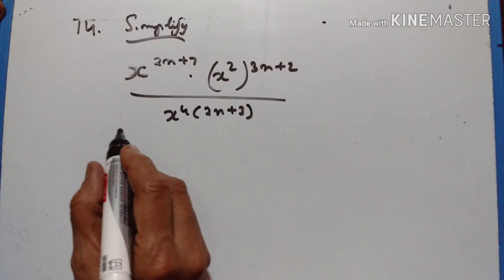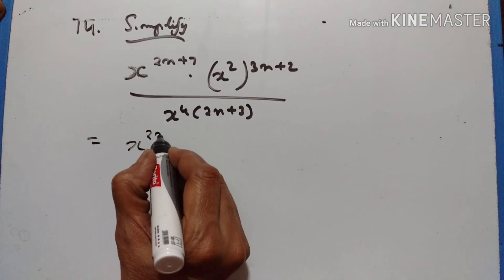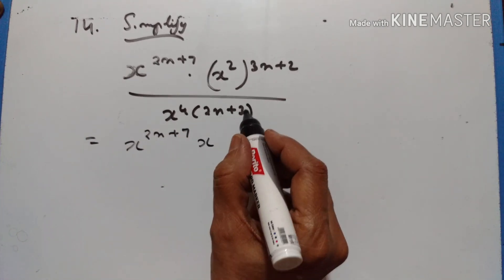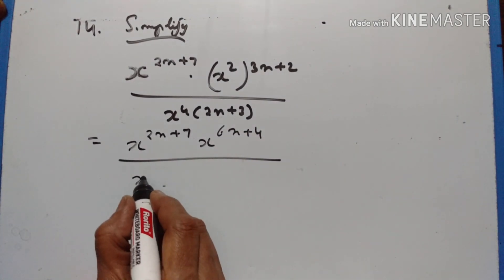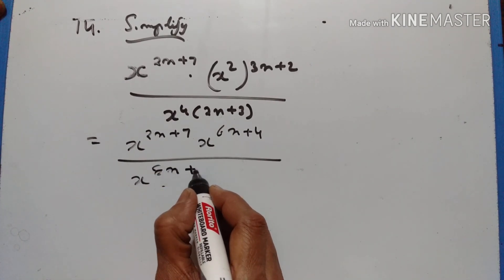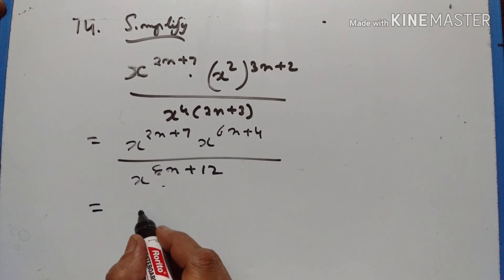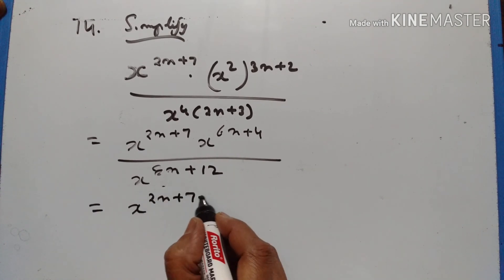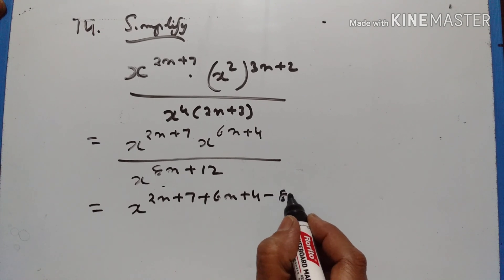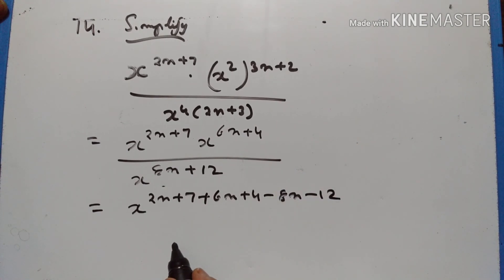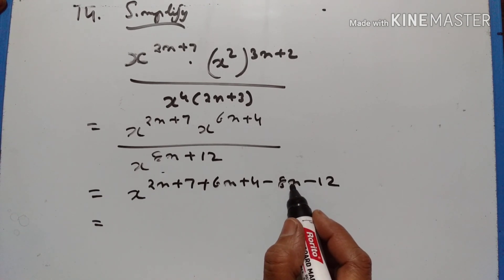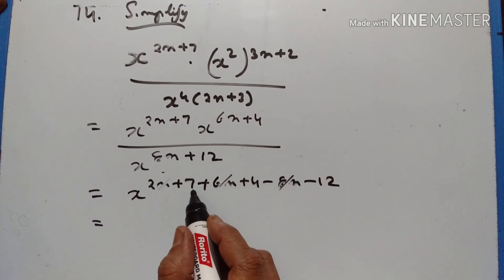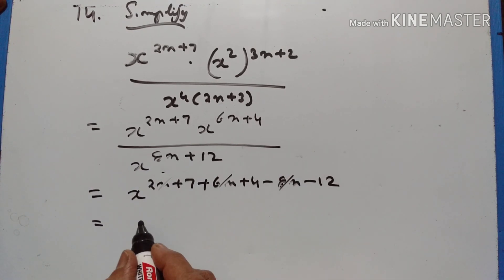Let us simplify this. x raised to the power of 2n plus 7, times x raised to the power of 2 into 3n plus 2, which is 6n plus 4, upon x raised to the power of 4 into 2n plus 3, which is 8n plus 12. This gives x to the power of 2n plus 7 plus 6n plus 4 minus 8n minus 12. 2n plus 6n equals 8n, and 8n minus 8n equals 0. 7 plus 4 equals 11, and 11 minus 12 equals minus 1. So the result is x raised to the power of minus 1, or 1 upon x.